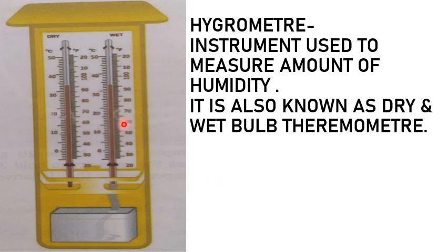A hygrometer is an instrument used to measure the amount of humidity. It is also known as a dry and wet bulb thermometer because this instrument has a piece of wet cloth dipped around the bulb. The other end of the cloth dips into a small container of water, and the rate of evaporation from the wet bulb keeps the temperature of this bulb lower than the dry bulb. A difference in temperature between the two thermometers indicates the relative humidity.